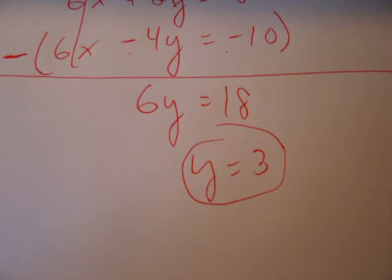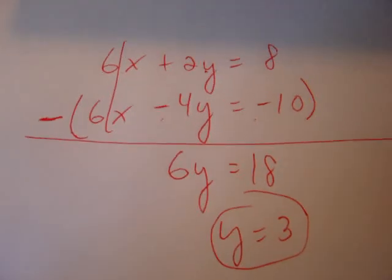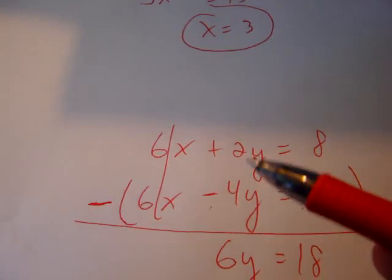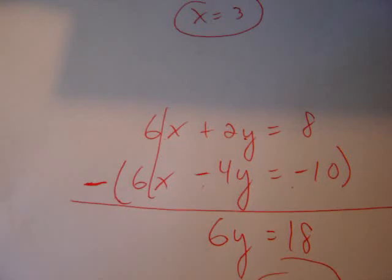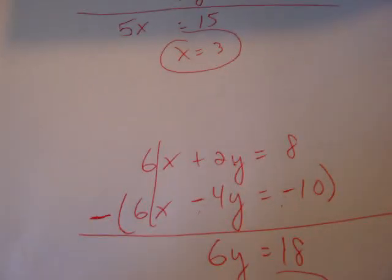y equals 3 is your y coordinate, or rather, 3 is your y coordinate. How do we get our x? Well, simply substitute in 3 for y in either of these two original equations. Now, those are the easy examples where your coefficients are basically...